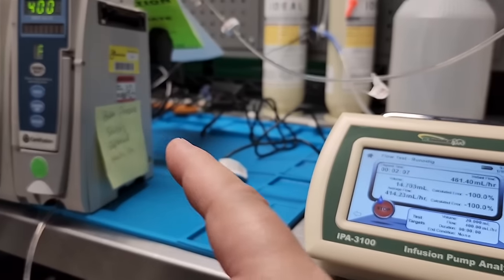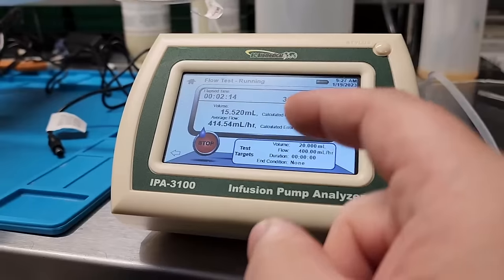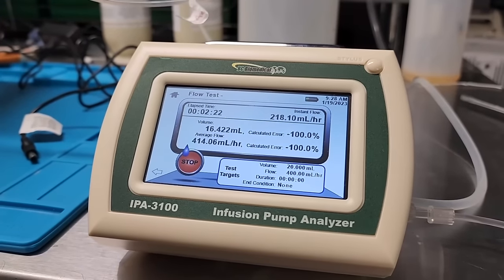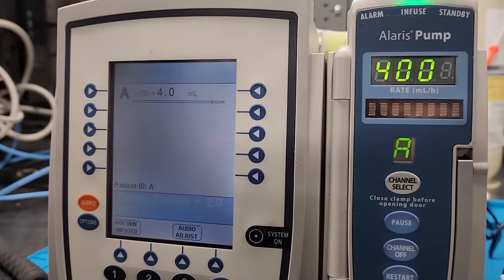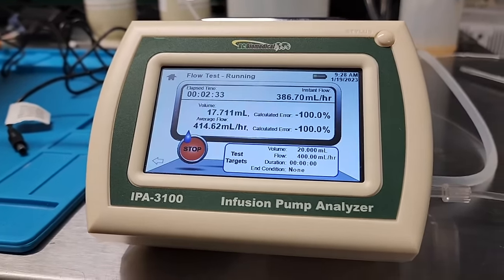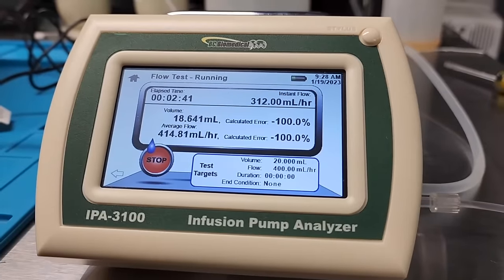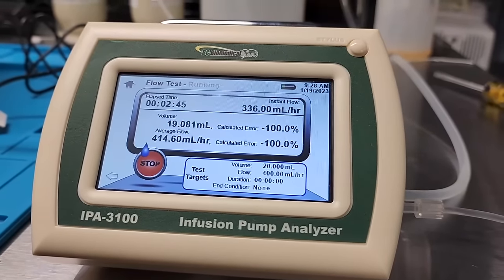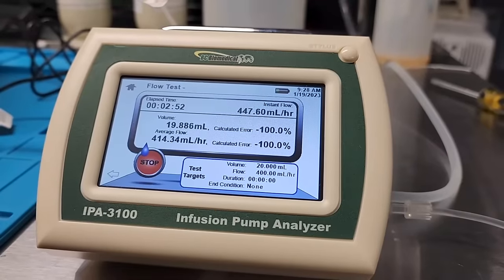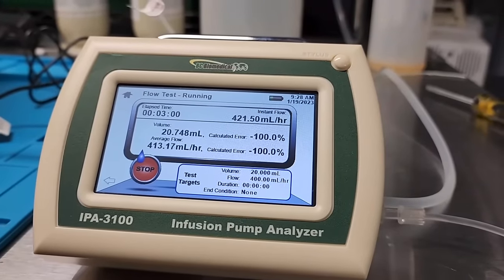And on these Alaris, remember that it has the KVO, keep vein open function. So after it's done with the infusion, you'll see that these numbers will quickly degrade, because it's no longer infusing at that correct rate. So your average flow right there, that's going to change real quick here as soon as it finishes up. And let's see, we have 3 and a half. You can see right there I was at 17 and a half milliliters. So it's going to be pretty accurate. Let's see what are our readings when it beeps saying it's done. We're getting close. We're at 414 milliliters per hour, that's pretty accurate. And there we go, 20.7.